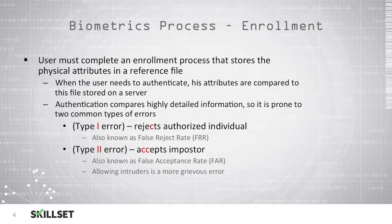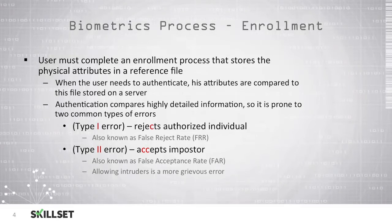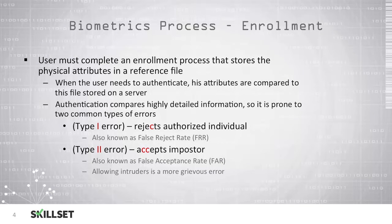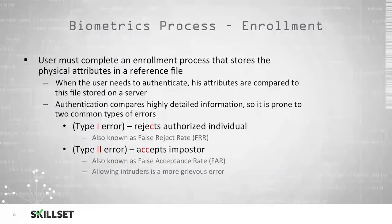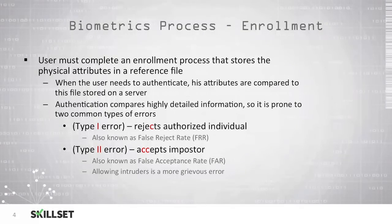This means we can have two different types of errors that occur during this process. The type 1 error is where we reject someone who is authorized to enter the system in error. This is also known as the false reject rate, or FRR.